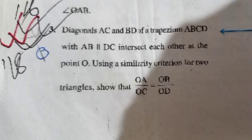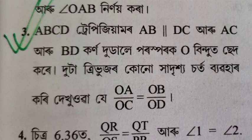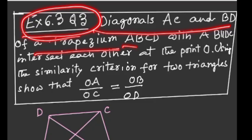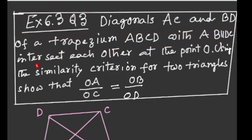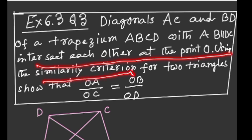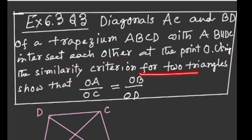Now exercise 6.3 question number 3. Diagonals AC and BD of a trapezium ABCD with AB parallel to DC intersect each other at the point O. Using a similarity criterion for two triangles, show that OA by OC is equal to OB by OD.